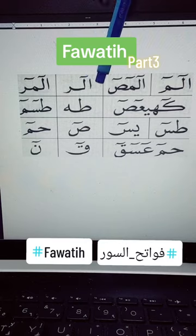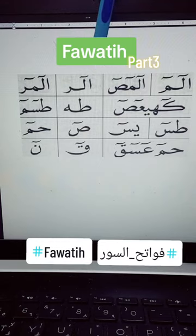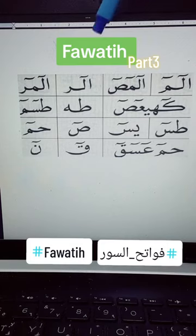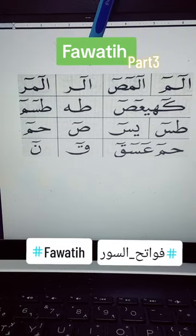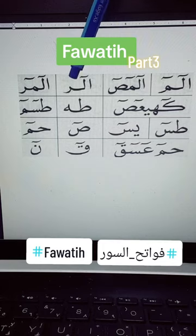So we have alif without any count, lam six counts, and ra six counts. When you see this sign — the match sign — then you have to do six counts. We will read it: alif, lam, ra. Alif, lam, ra.